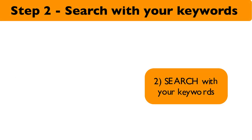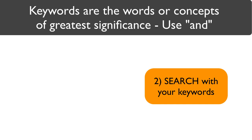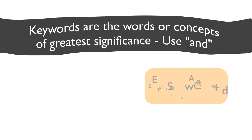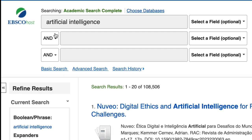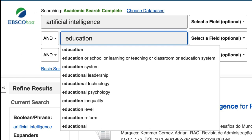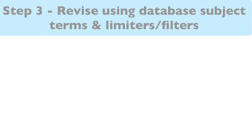Step 2: Search with your keywords. Keywords are the words or concepts of greatest significance in your research question. Put an 'and' between your keywords and think like the database, using words or concepts that a writer — or an academic writer in particular — would use.